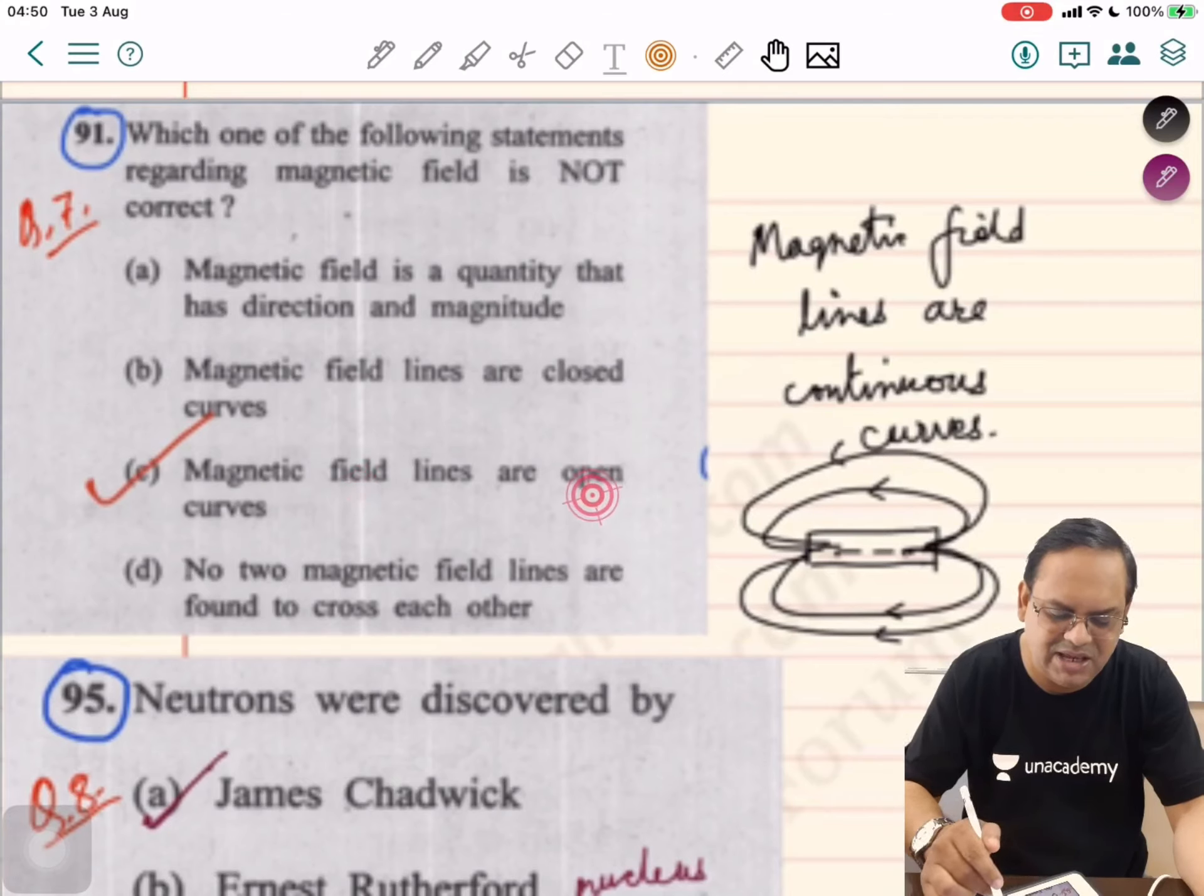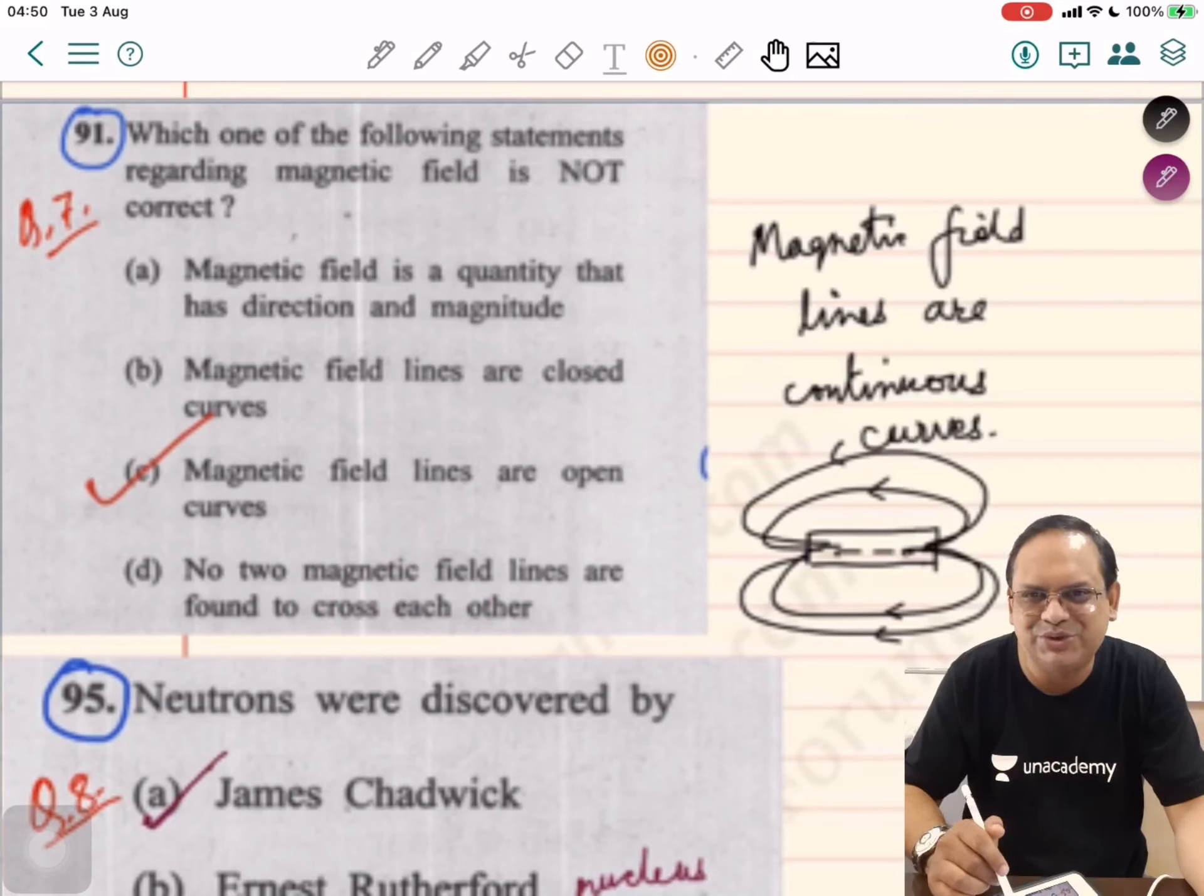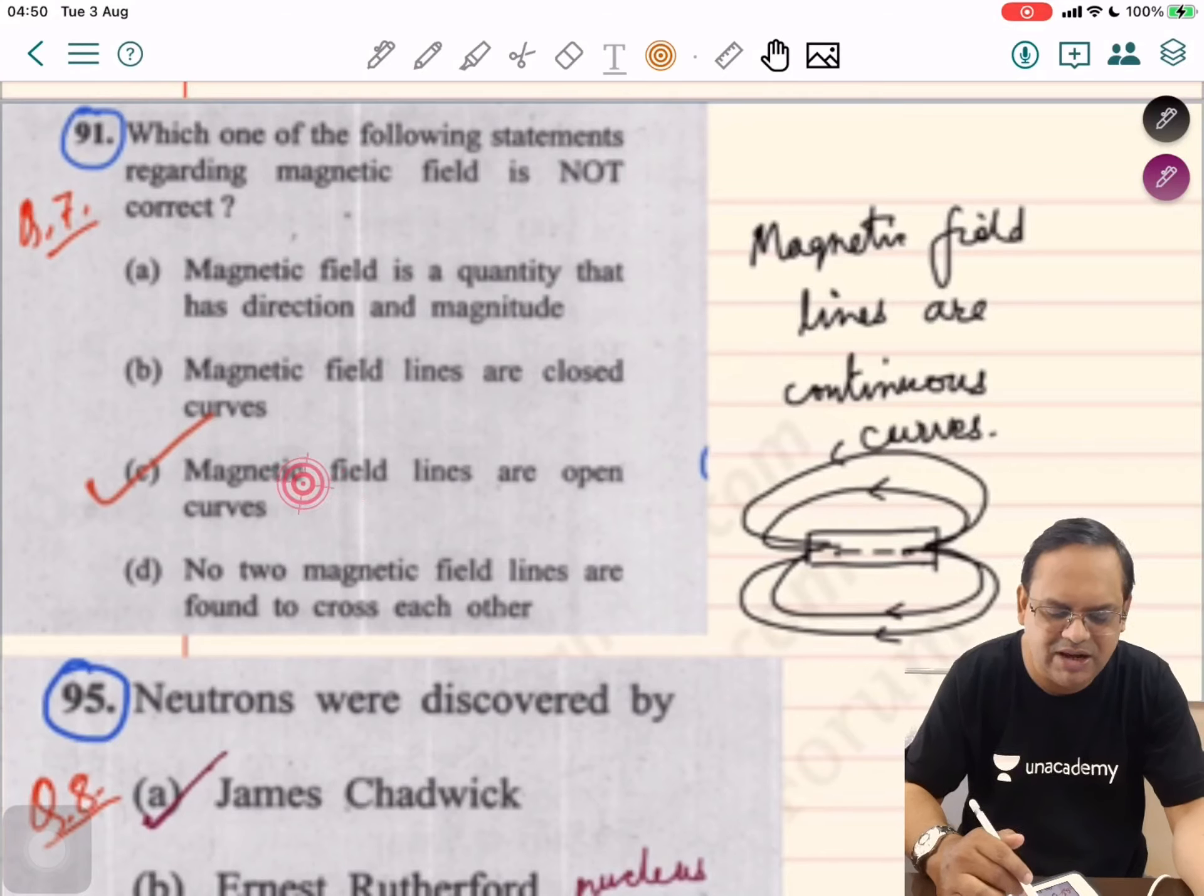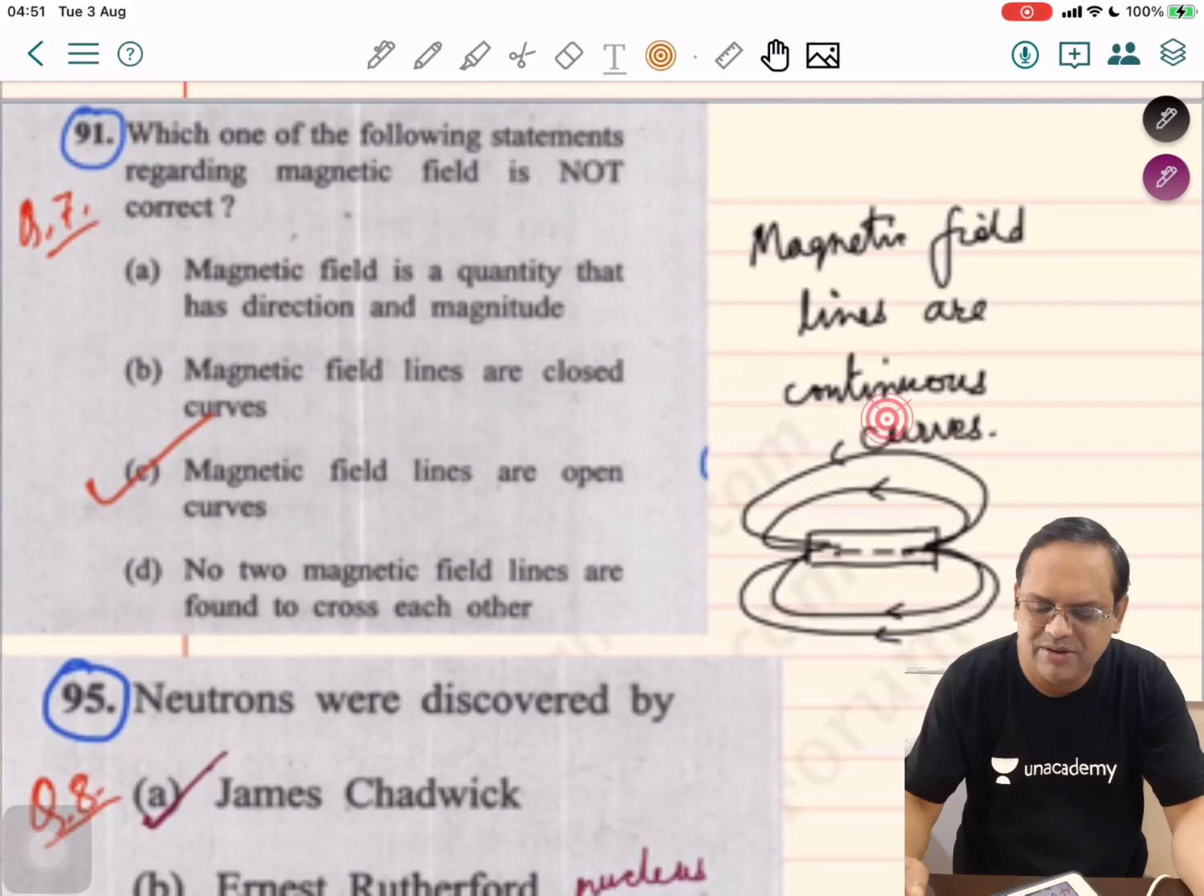Third option is given: magnetic field lines are open curves. No two magnetic field lines are found to cross each other. Definitely this is also true. Not correct option is C. Magnetic field lines are continuous curves. I have shown in a rough diagram how they are continuous curves, because magnetic field lines when the north pole is located don't terminate at the south pole. In the middle of the magnet the continuity is maintained.